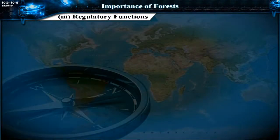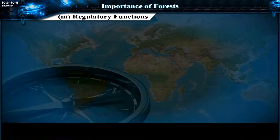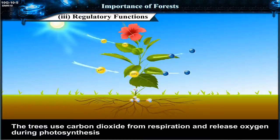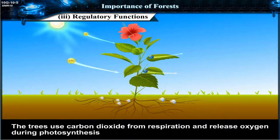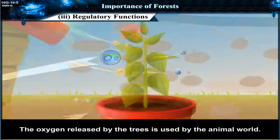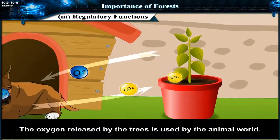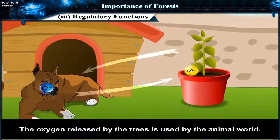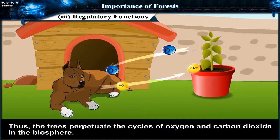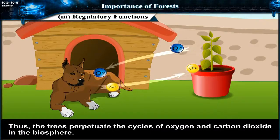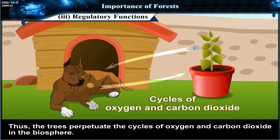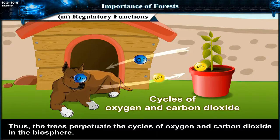Regulatory Functions: The trees use carbon dioxide from respiration and release oxygen during photosynthesis. The oxygen released by the trees is used by the animal world. Thus, the trees perpetuate the cycles of oxygen and carbon dioxide in the biosphere.